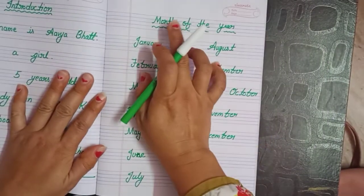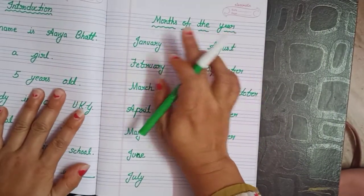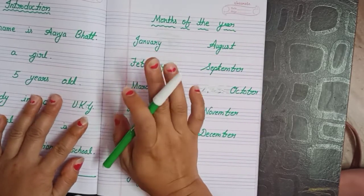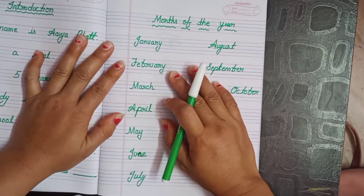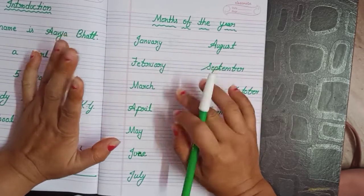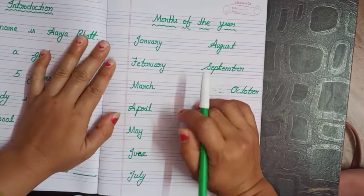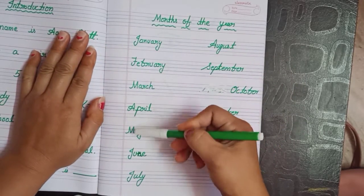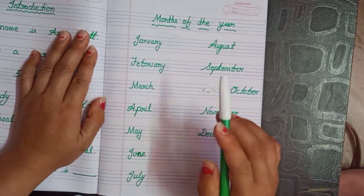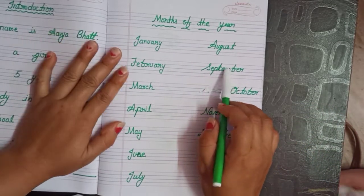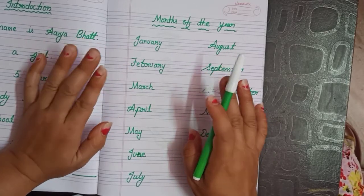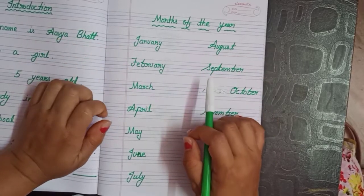Now next one is months of the year. Tell me children, how many months in a year? Let's count: one, two, three, four, five, six, seven, eight, nine, ten, eleven, twelve. Yes! There are twelve months in a year. There are twelve months in a year.